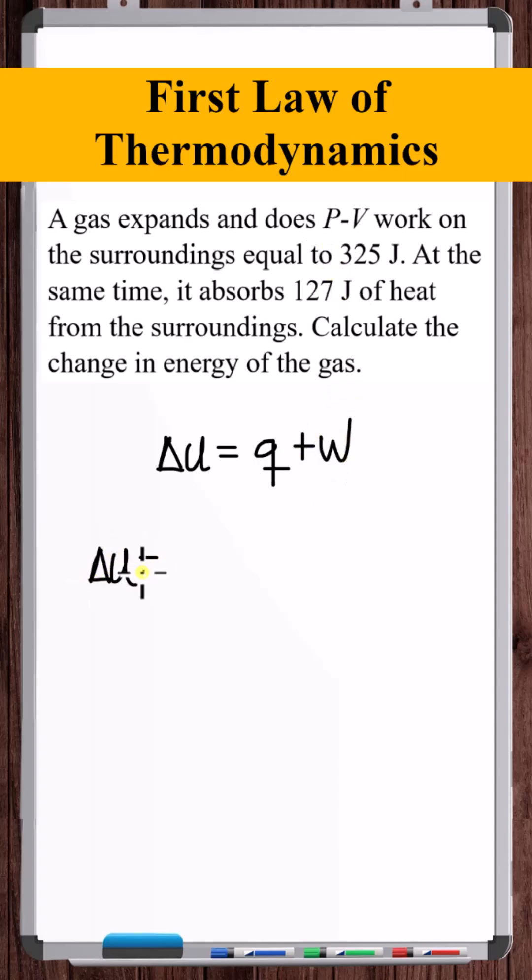So the change in internal energy of the gas is equal to the system absorbed 127 joules of heat, so positive 127, and then the gas or the system did work on the surroundings, so energy in the form of work was transferred out of the system, so minus 325.